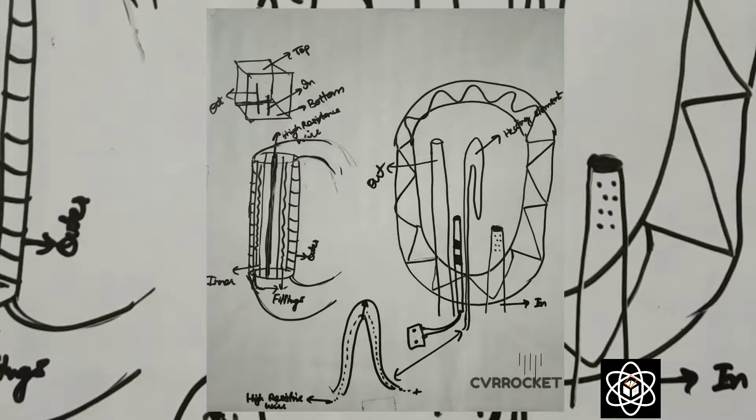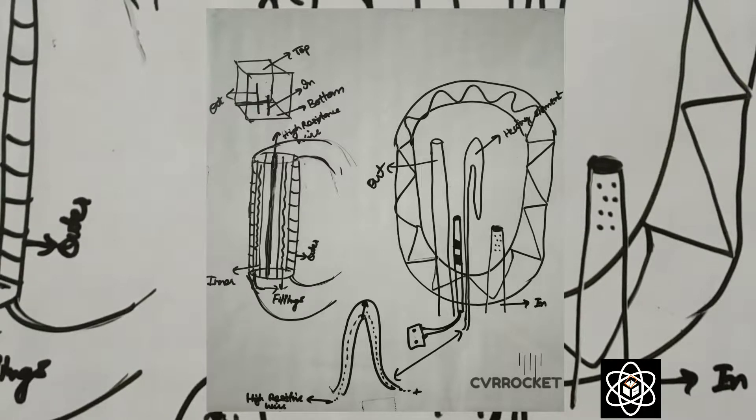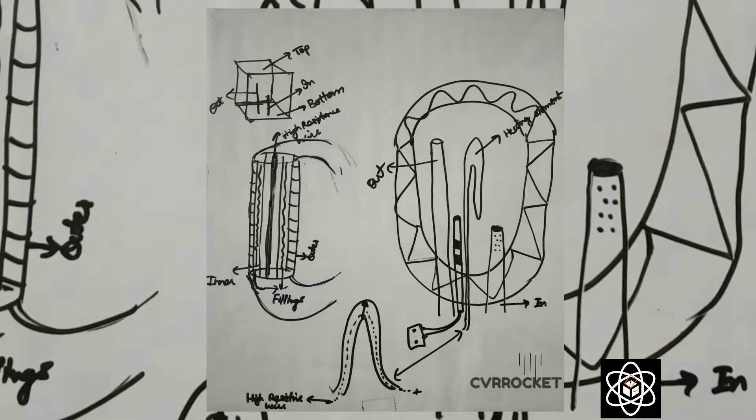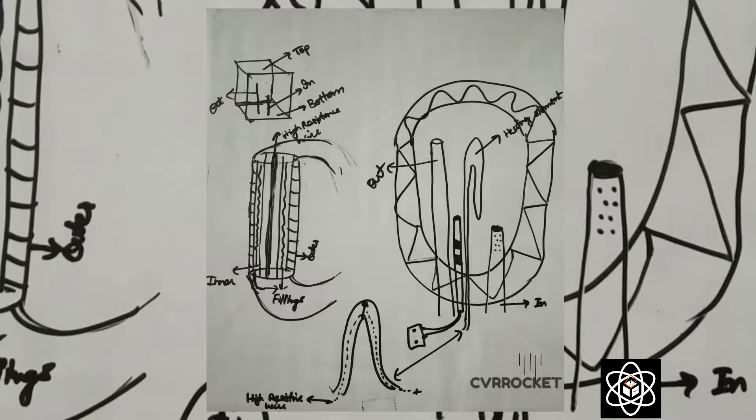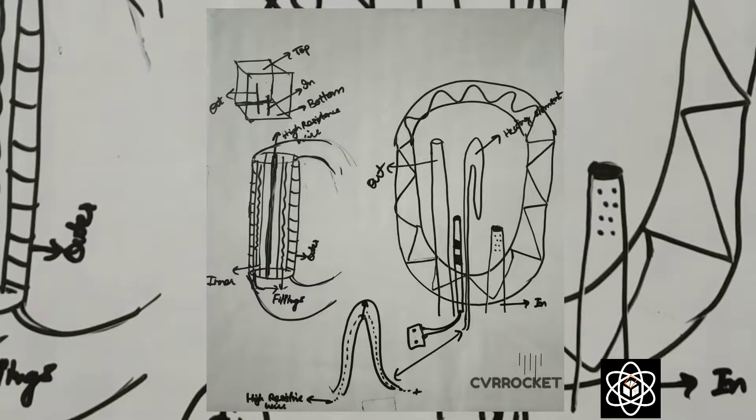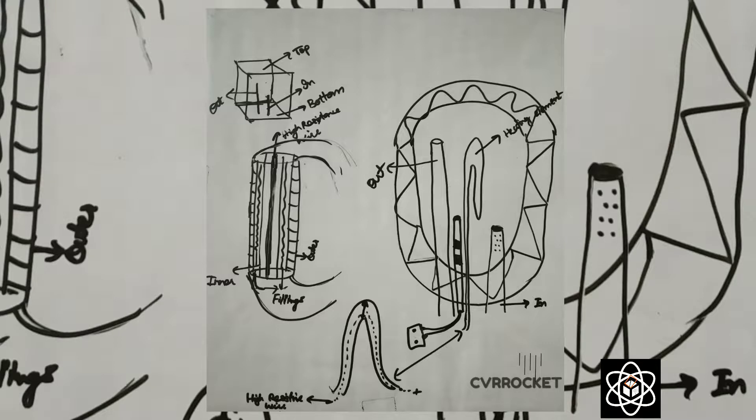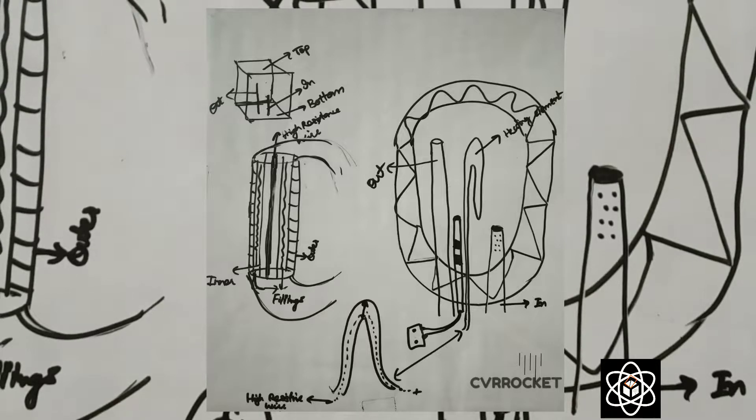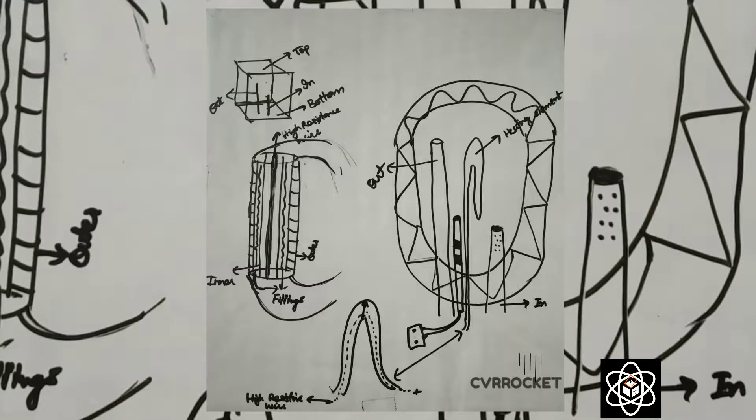That's the basic principle of heating. In the heating element shown in the bottom picture, the conducting wire - a high-resistive wire - will be passed between these two elements. The cross-section is given, with fillings, and the high-resistive wire is passed inside.